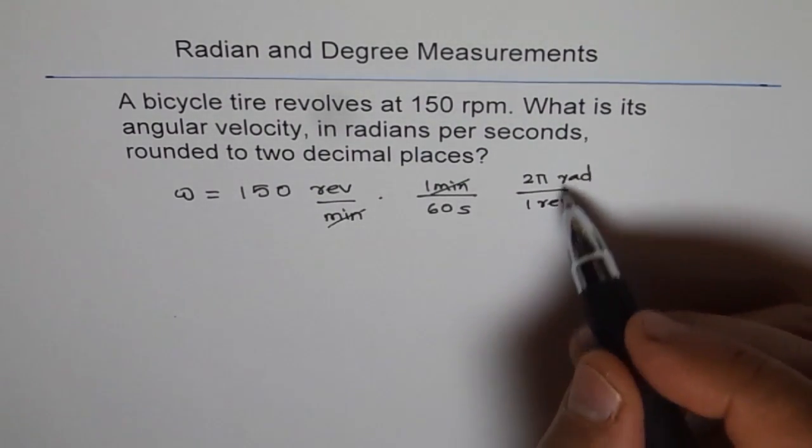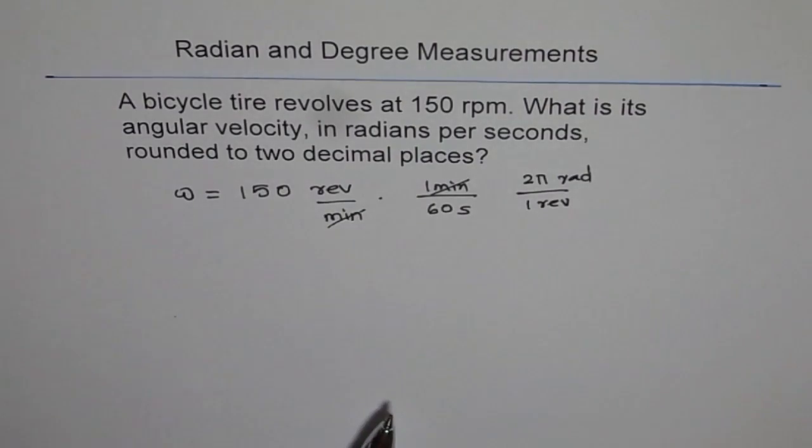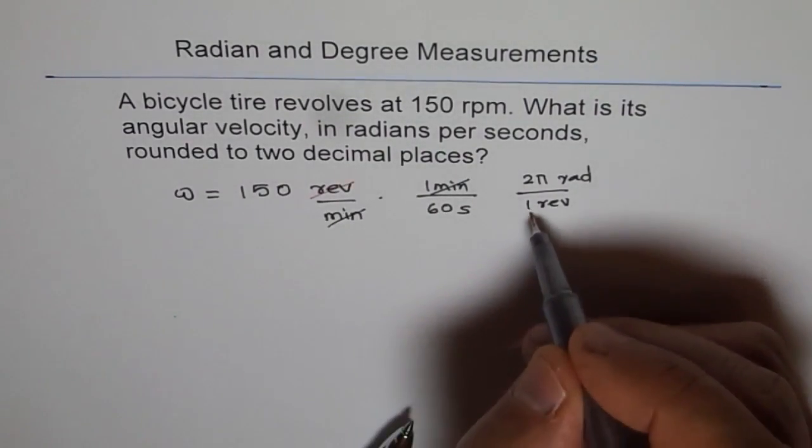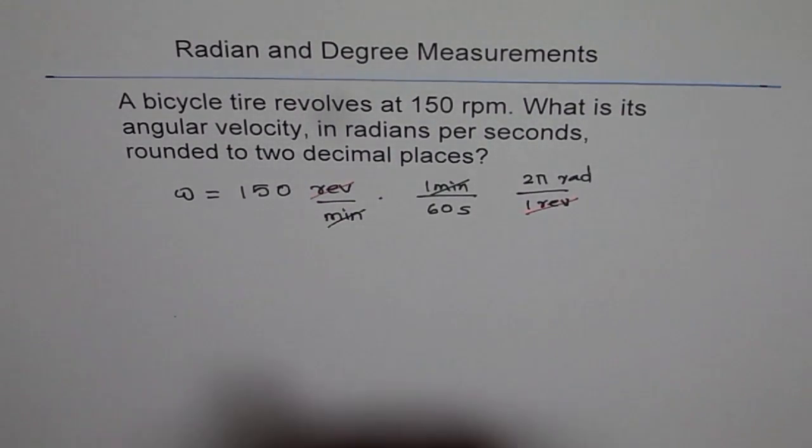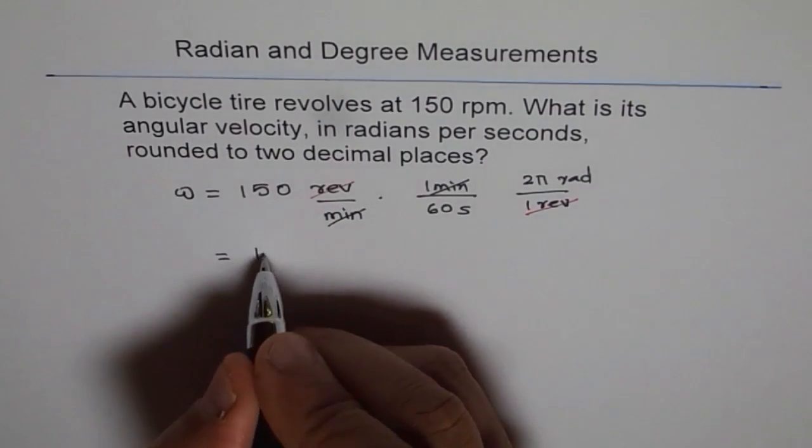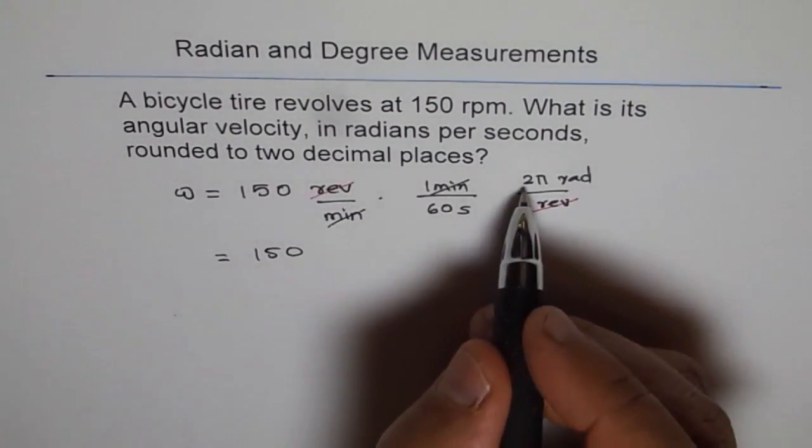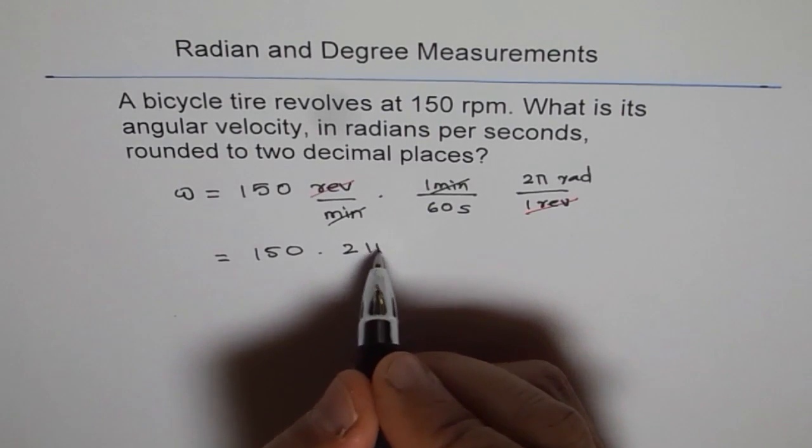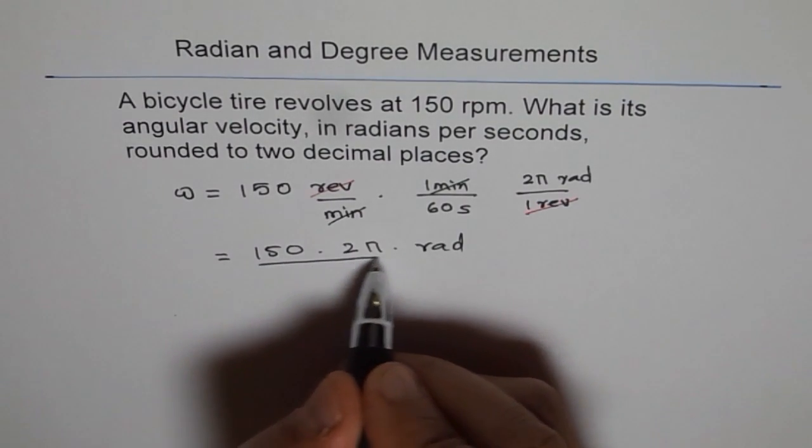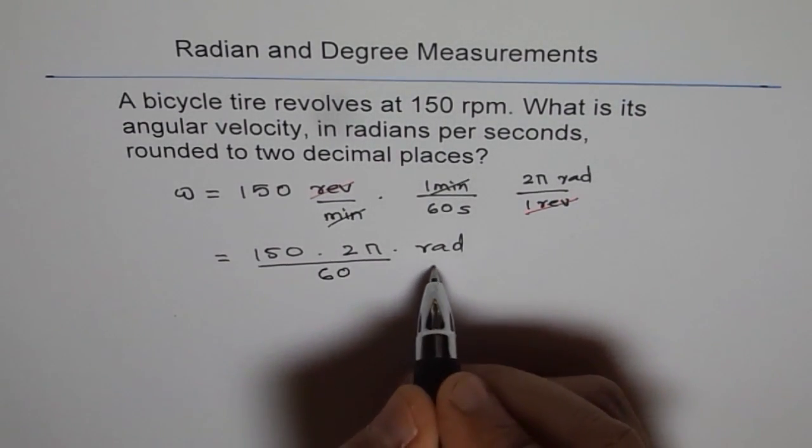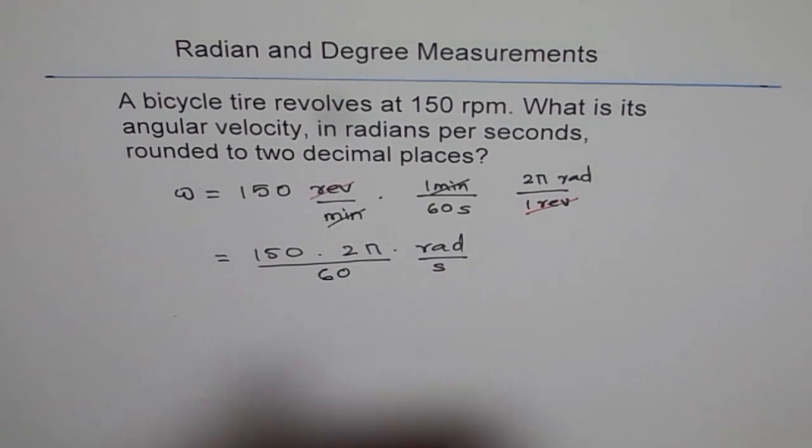So I need to write it in this fashion so that revolution cancels out and we are left with radians per second. Do you see that? And therefore we get our omega as 150 times two pi radians and here we have 60 seconds over 60. Let me write seconds here. So we have radians per second as our unit.